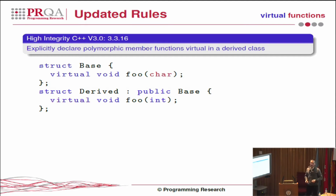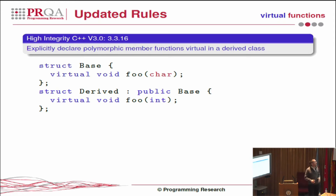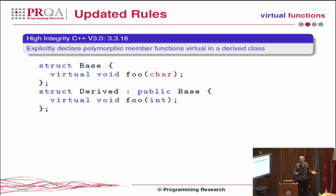But of course this doesn't actually do anything. If I come along and I change the base type — the parameter on the base member — the code will silently continue to compile. There's absolutely nothing that tells us that there's any problem here. So the virtual keyword does nothing; it's pure documentation.